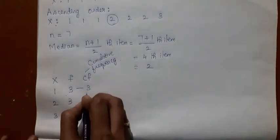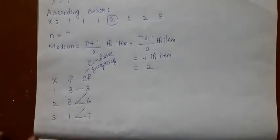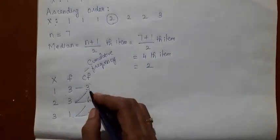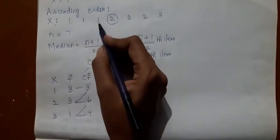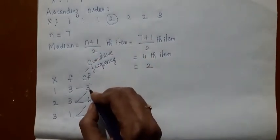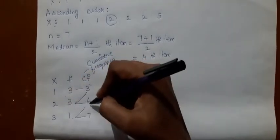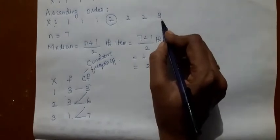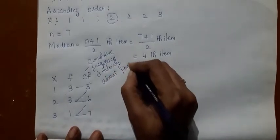Write this value as such, then add 3 plus 3 — that is 6 — plus 1 is 7. The meaning of cumulative frequency: in the first 3 positions you have 1; from 4th to 6th position you have 2; and in the 7th position you have 3. So, this cumulative frequency is talking about the position of the numbers.